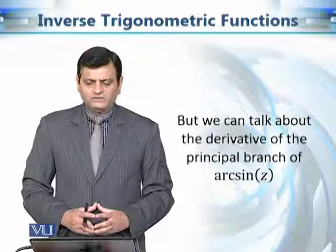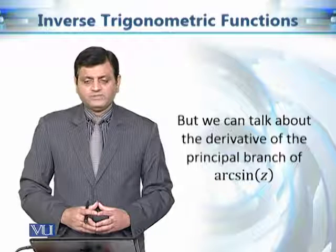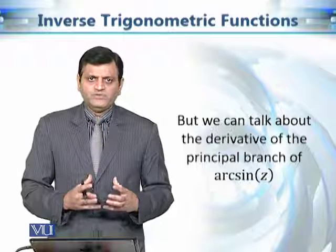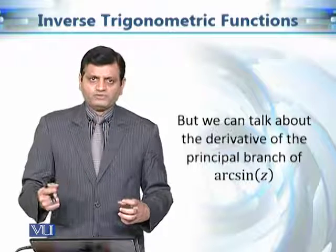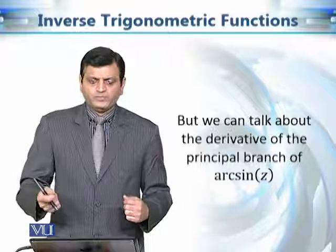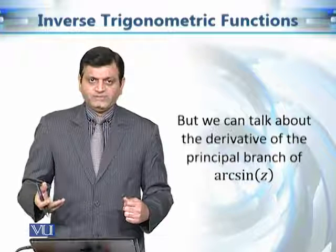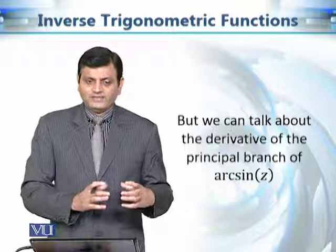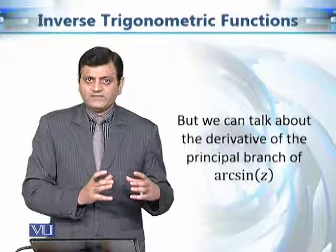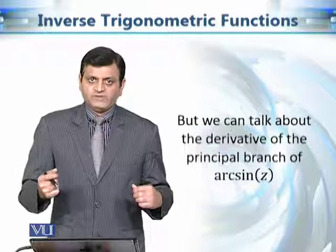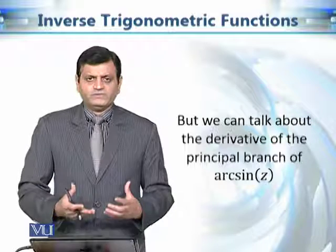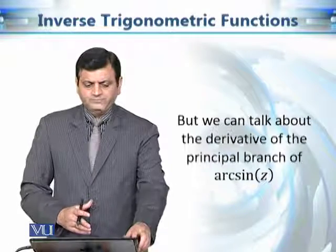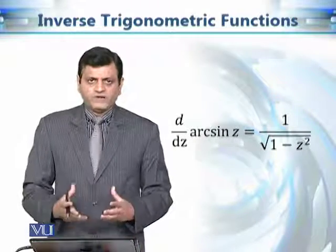We choose the principal branch of these functions. As discussed in the previous module, it is a very complicated task to describe the values of z for which we get one particular branch. It is complicated to find out the values of z in the z-plane that will give one branch of this multivalued function, but we can always assume theoretically that it is just one branch of arc sine z.